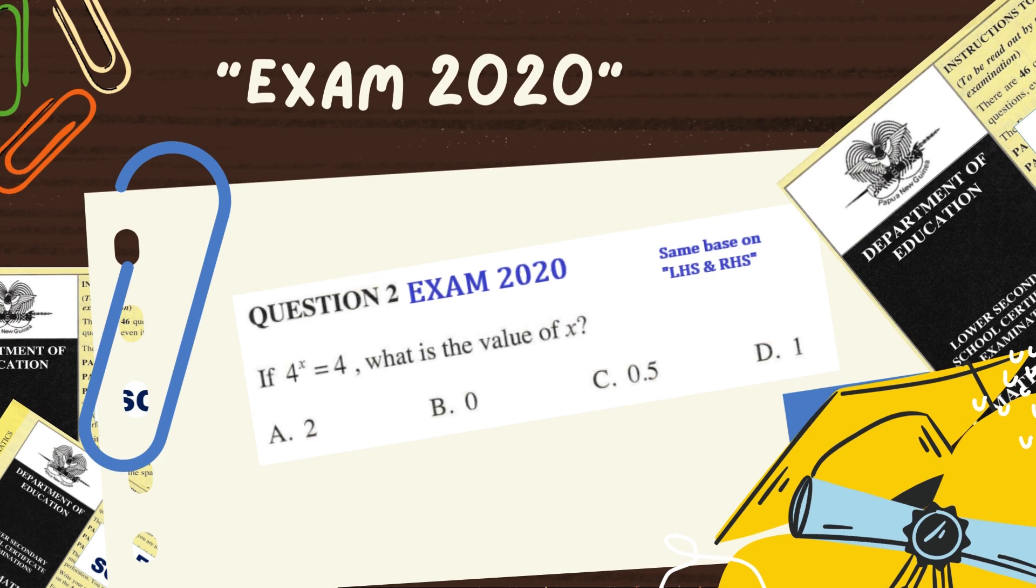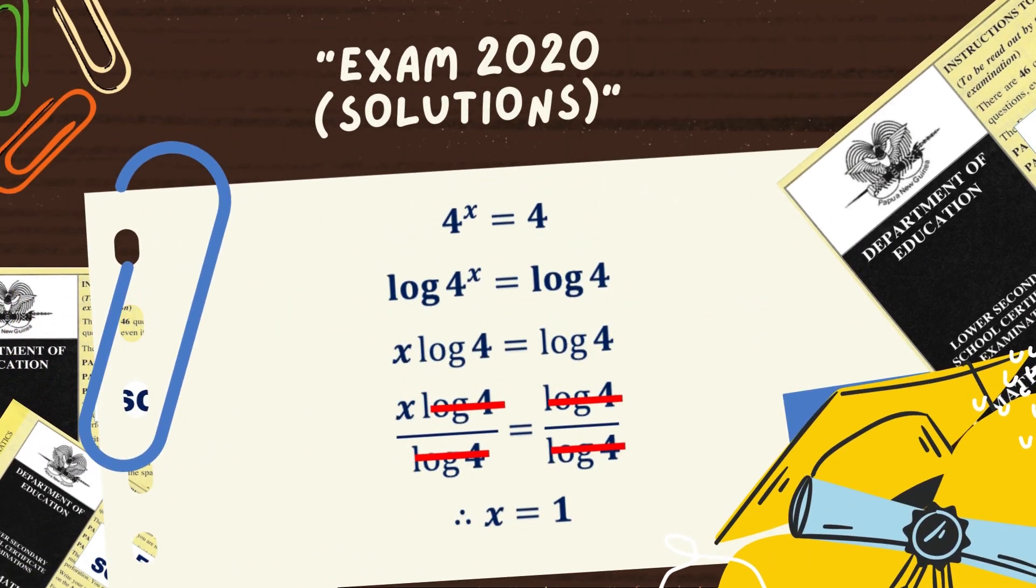We apply logarithm on both sides of the equation purposely to isolate the unknown value and then solve. Obviously, by looking at the question, we should say that our answer is one.